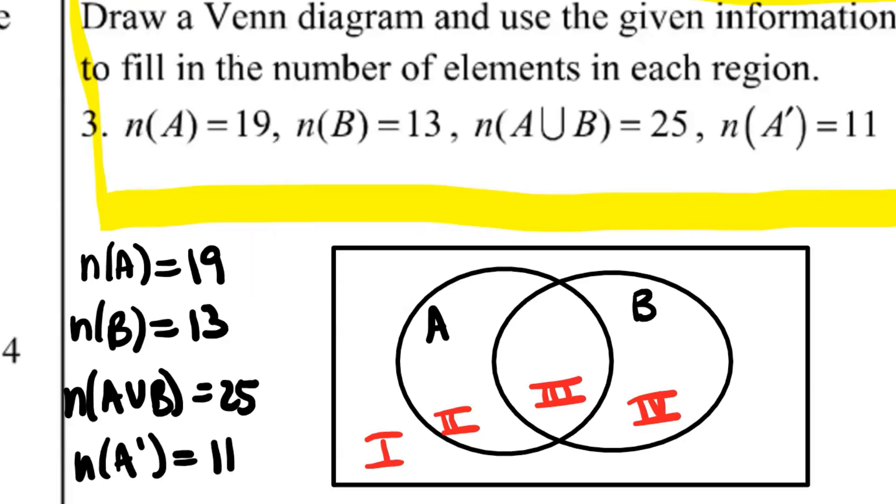For example, set A, the number of elements in set A is referring to regions two and three. The number of elements in set B, that's talking about regions three and four.